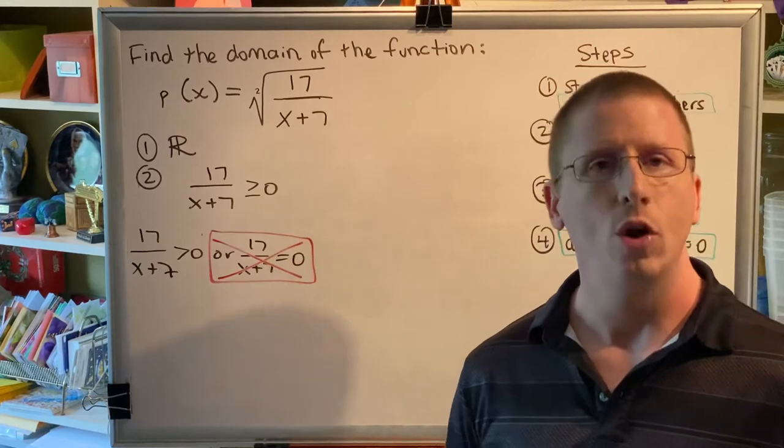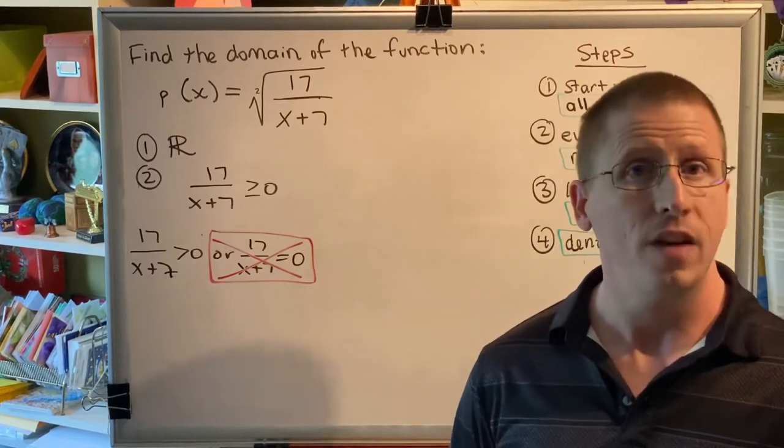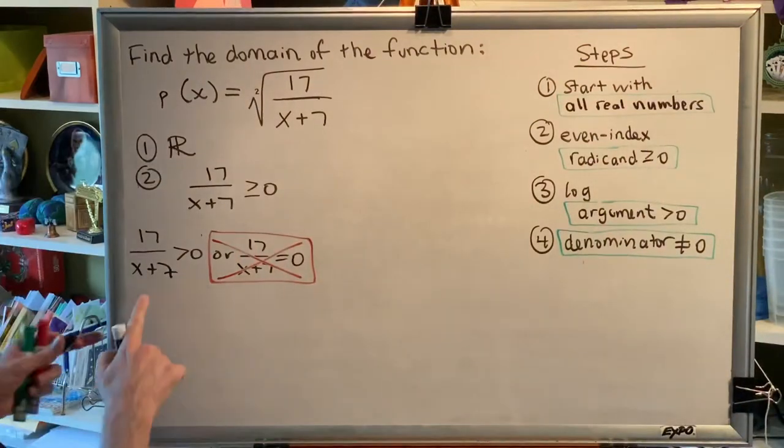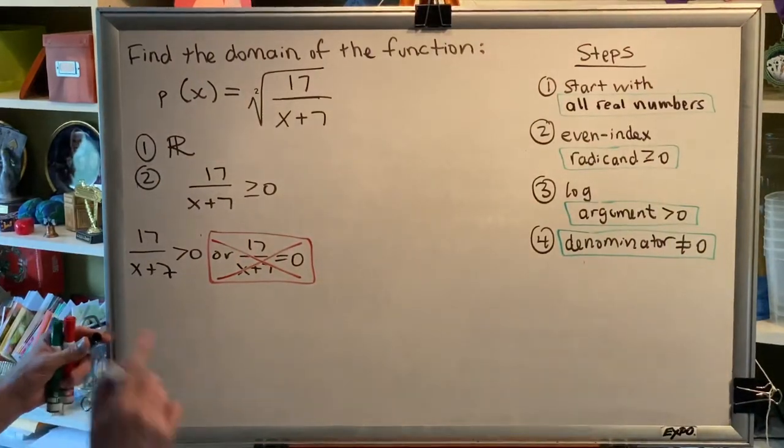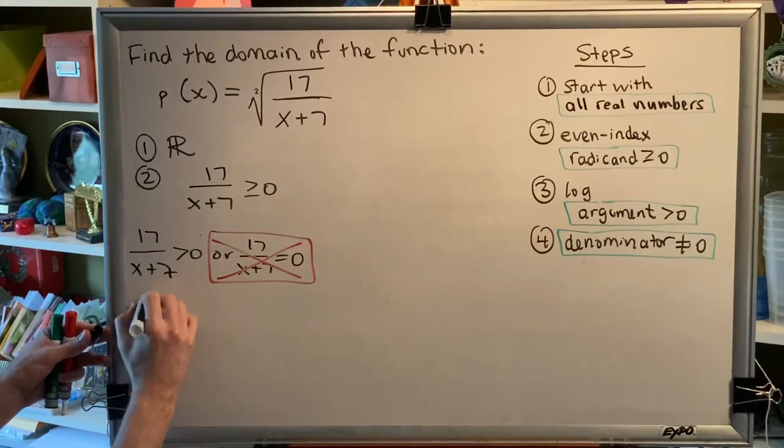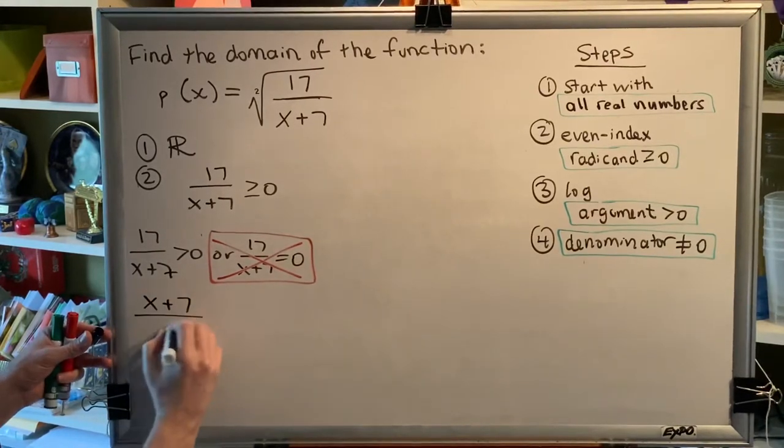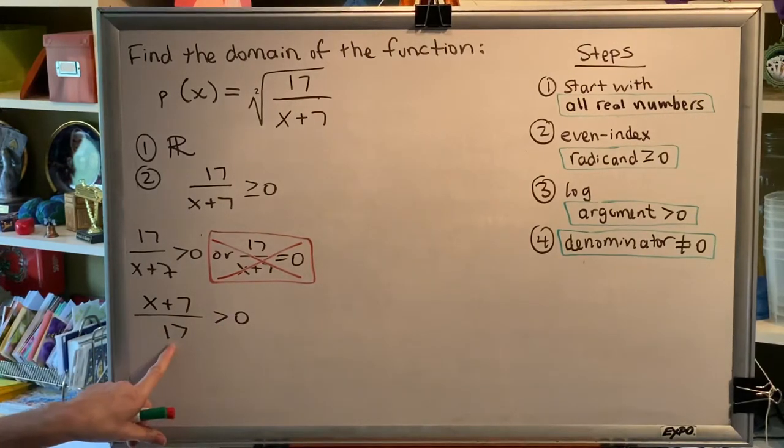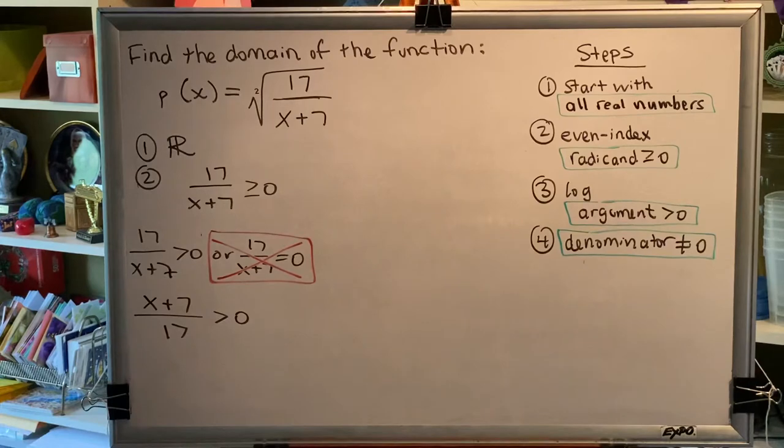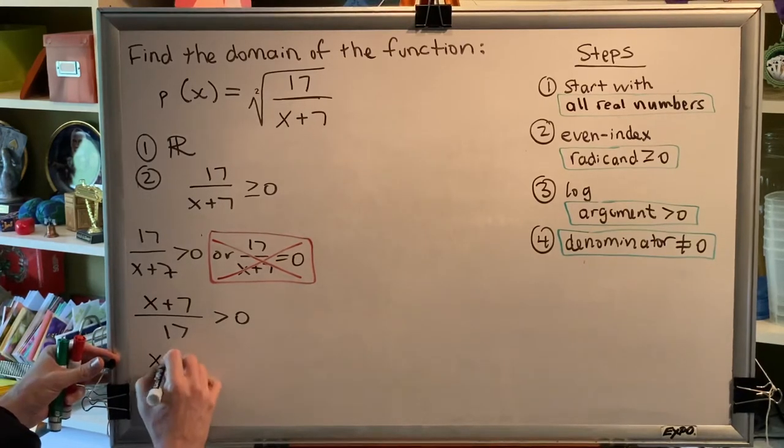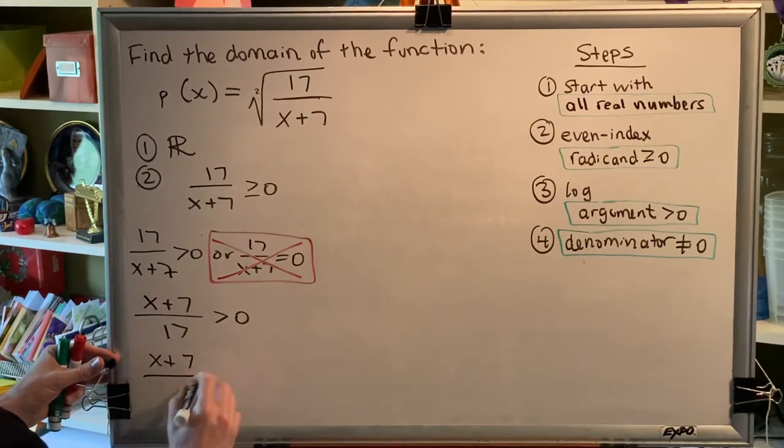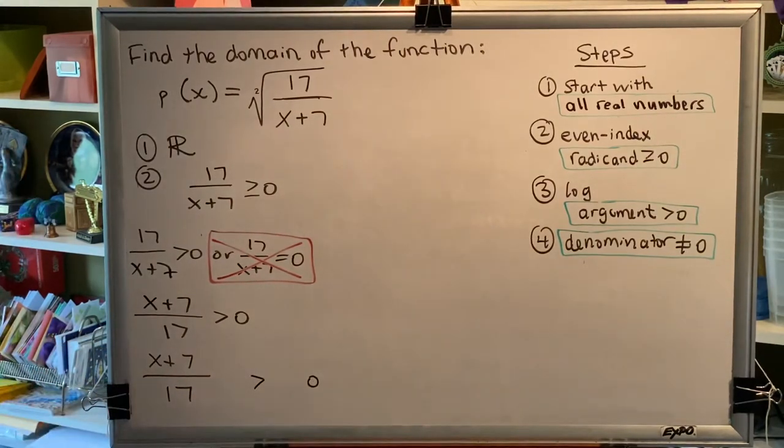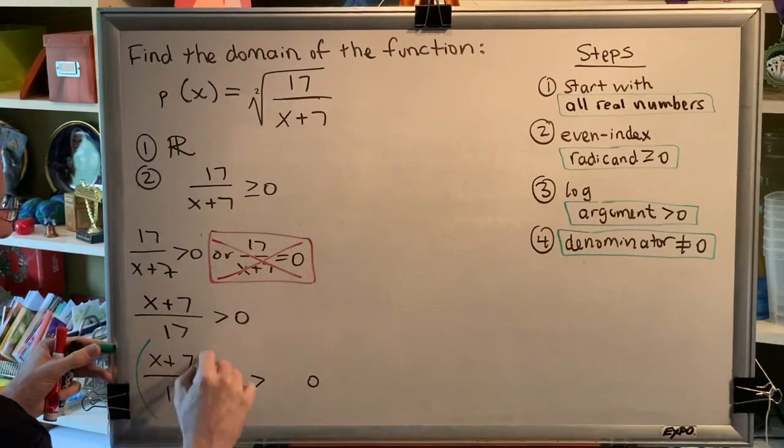So, what do we do instead? We rely on our properties of inequalities, specifically the reciprocal property. The reciprocal property says that if a fraction is greater than zero, then its reciprocal is also greater than zero. So, we get x plus 7 over 17 is greater than zero. Now, if we wanted to multiply both sides by 17, that we can do, because we know 17 is positive. So, we'll write x plus 7 over 17 is greater than zero, and we'll multiply both sides of this inequality by 17.